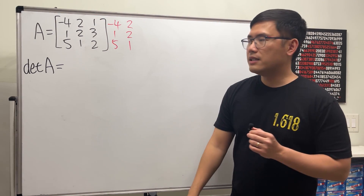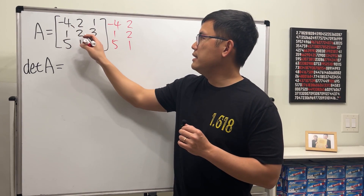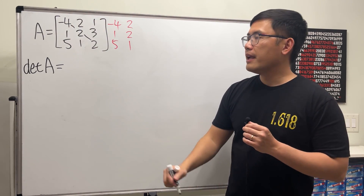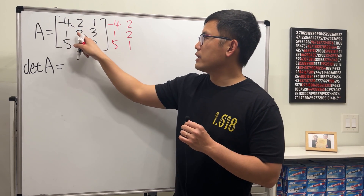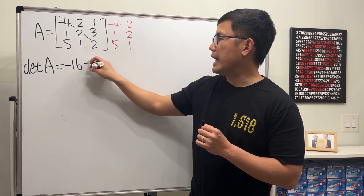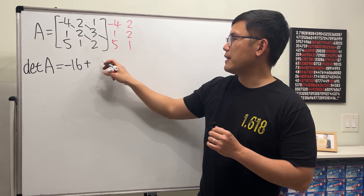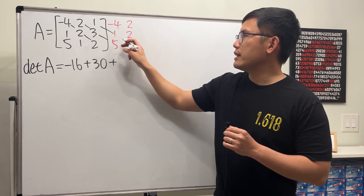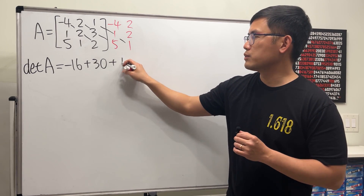What we want to do next is multiply these numbers diagonally and add them. So negative 4 times 2 times 2 is negative 16, and we add 2 times 3 times 5 which is 30, and then we add 1 times 1 times 1 which is plus 1.